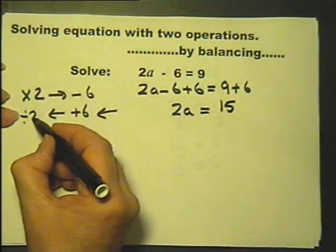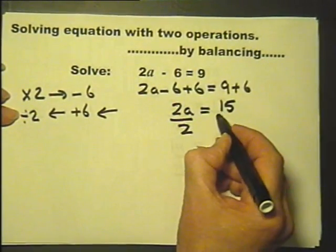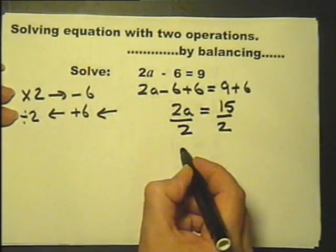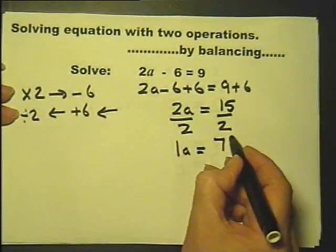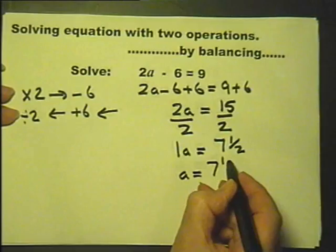Follow that by the division, divide both sides by 2. Whatever I do on the left hand side I must do to the right hand side. 2a divided by 2 is 1a and 15 divided by 2 is the same as a half of 15, so therefore a is in fact 7 and a half.